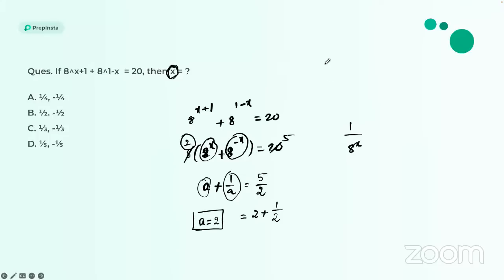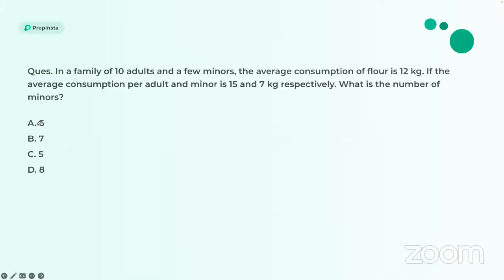Since a = 2, we have 8^x = 2. Since 2 = 8^(1/3), therefore x = 1/3. The answer is option C. You don't even need to find false or negative terms since the options are already given.